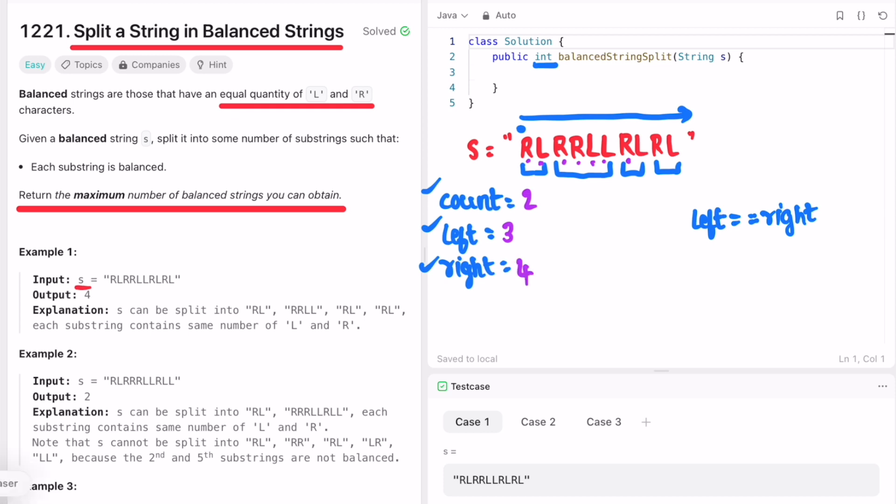So we are at right now, so increment right. Next iteration we are at L, so increment left. Now this condition is passing again, so increment count. Count is three now. We move further, we see an R, so increment right. Now we see an R, so increment right. Now we see an L, so increment left. And now this condition is passing again, so increment count.